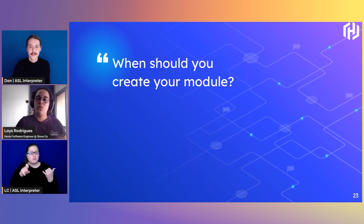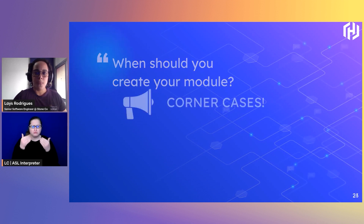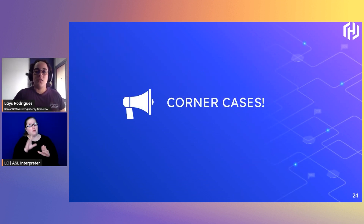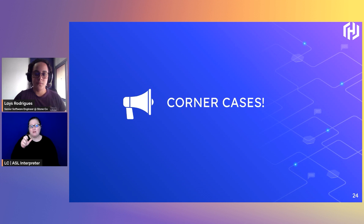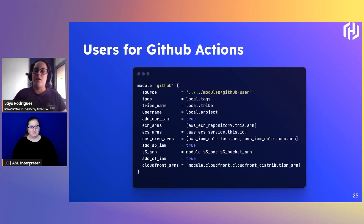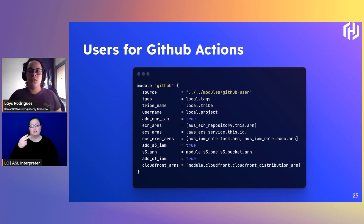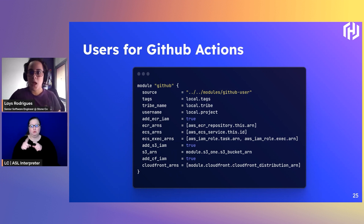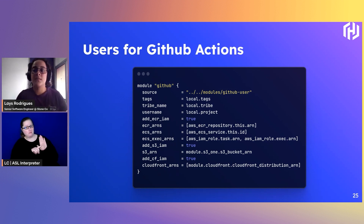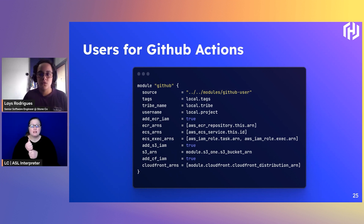By now you should be wondering: when would it be the case that you should write a module? The answer is corner cases. Using existing modules validated by the community gives you a head start on your development process — it allows you and your team to deliver faster, achieving the expected time to market. But you may not find what you need on the Terraform registry. In my case, I felt the need to create a module to manage the creation of AWS users related to GitHub Actions pipelines. Almost on a daily basis we create infrastructure for new applications and need specific IAM users to handle deployments. I pass the ARNs of the resources I require and get back a user with the permissions needed to deploy our code to the related AWS services.